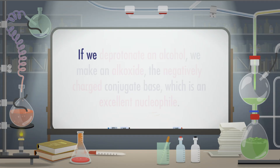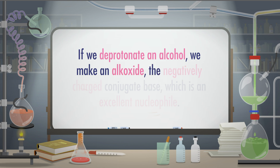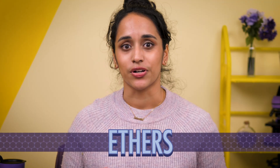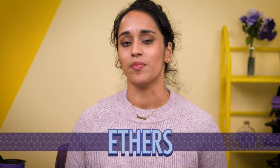So, we've clearly seen lots of different ways to make alcohols. But what happens if we use alcohols in chemical reactions? Well, we've seen that hydroxide ions are excellent nucleophiles, but alcohols aren't so nucleophilic – their charge is neutral, and the oxygen in the hydroxyl group holds tightly onto its electron pair. However, alcohols are weakly acidic compounds with a pKa around 16. So if we deprotonate an alcohol, we make an alkoxide – the negatively charged conjugate base – which is an excellent nucleophile. Alkoxides can help us make ethers, which have an oxygen connected to two alkyl or aromatic carbons.